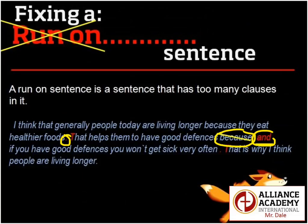We've eliminated our run-on sentence problem, and if we can consistently do that in our writing, you're going to see a huge change. So again, we've talked about comma splices, sentence fragments, and run-on sentences. We looked at clauses and how that works — it's almost a mathematical structure. If you can remember those simple things, you're going to be a much better writer. Thank you very much.